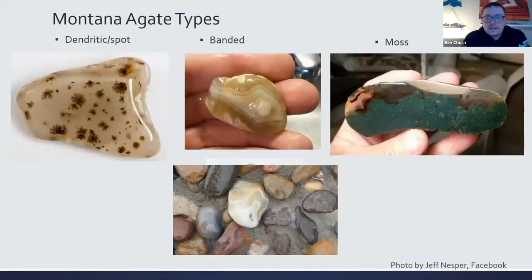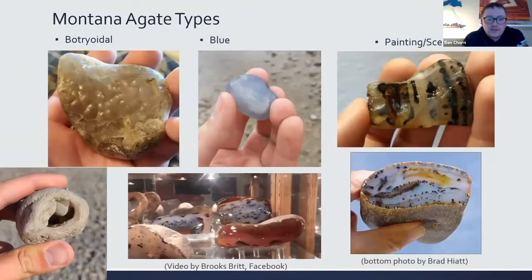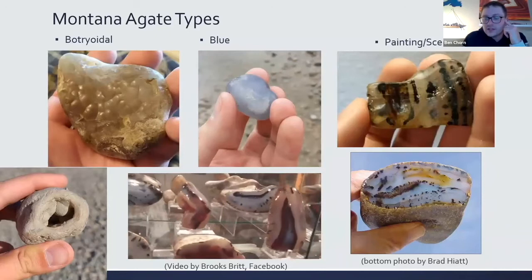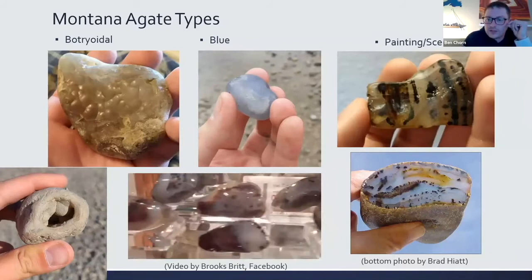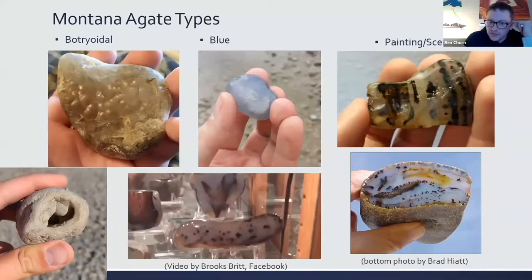There are several Montana agate types you can find. Dendritic or spot agates feature manganese oxide inclusions giving them dendritic growths. You can also find banded agates and water-level-style banded agates. More rare is the typical moss agate and botryoidal agates. Blue Montana agates are pretty rare but do exist. The most valuable are painting or scenic agates, where the dendrites look like mountains, trees, or sunsets. A video in the presentation shows a large collection of different Montana agates.